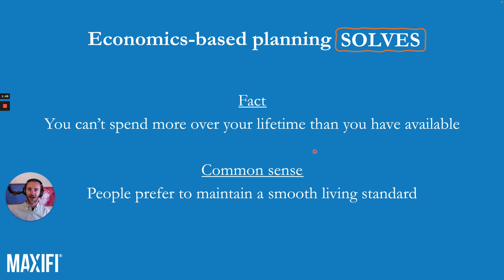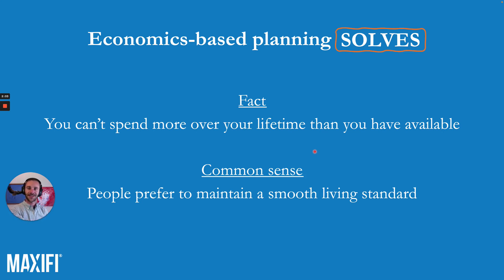How does it do this? It relies on two things. The first component is a fact: you cannot spend more over the rest of your life than you have available in resources. This generates what Maxify calls your lifetime balance sheet — the idea that your lifetime assets must exactly equal your lifetime liabilities. The second component is common sense: people prefer to maintain a smooth living standard throughout retirement, rather than living small today and large tomorrow or vice versa.